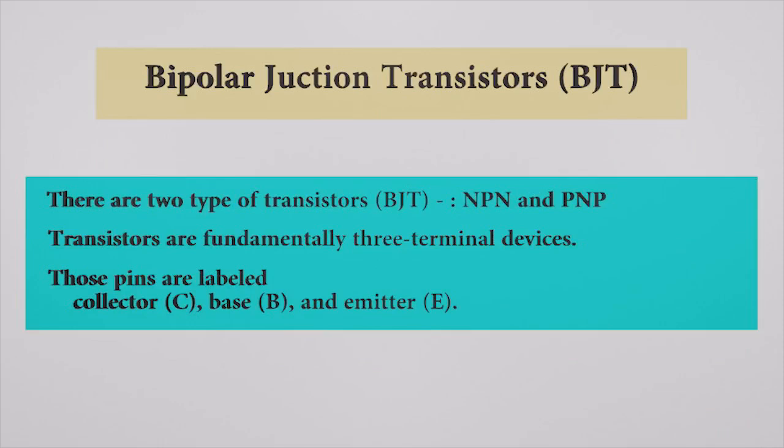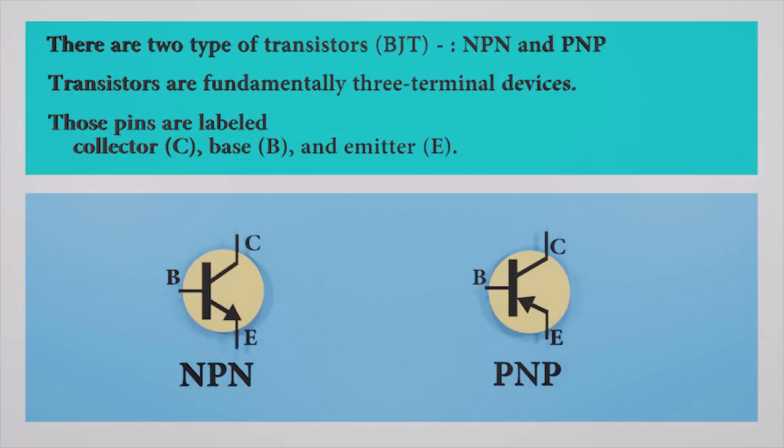It's slightly easier to understand. There are actually two versions of BJT, NPN and PNP. Transistors are fundamentally three terminal devices. Those pins are labeled as collector, base, and emitter.